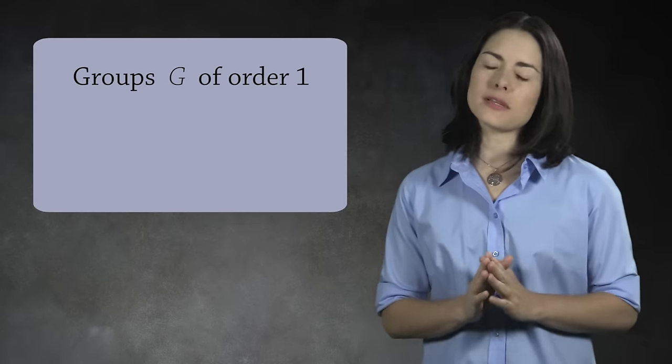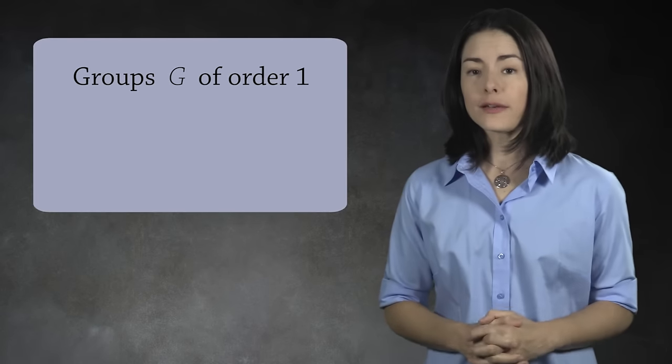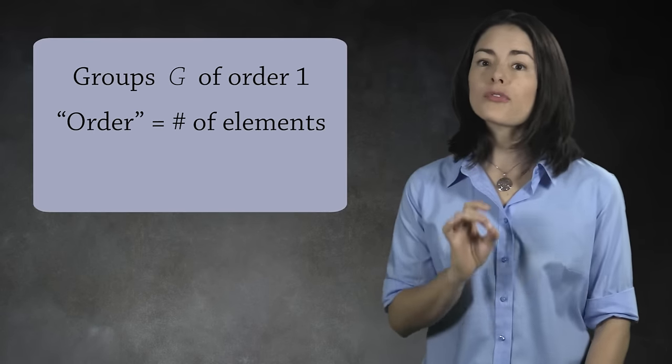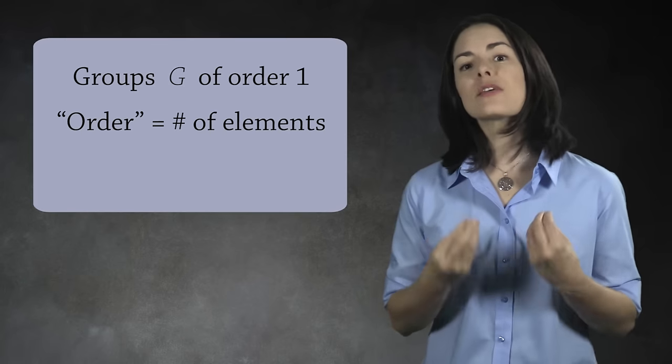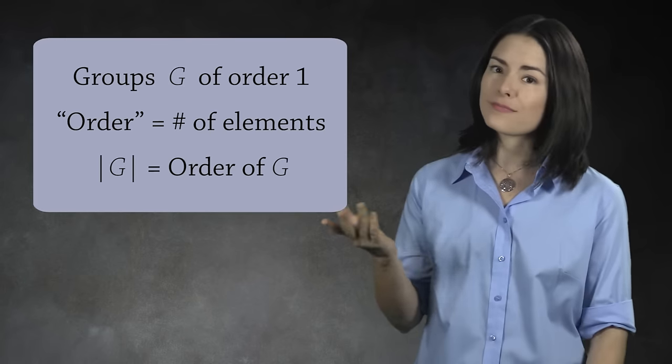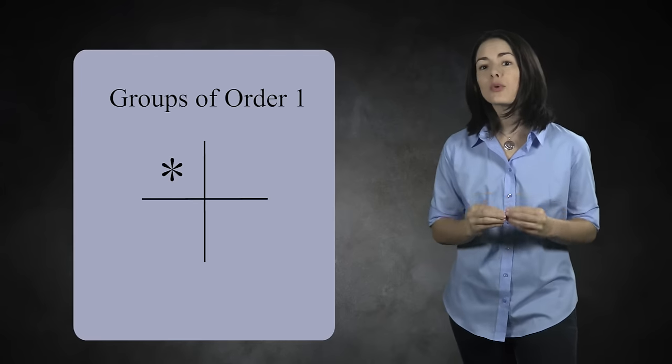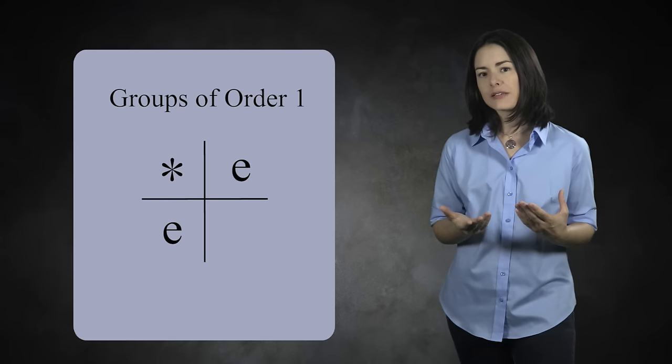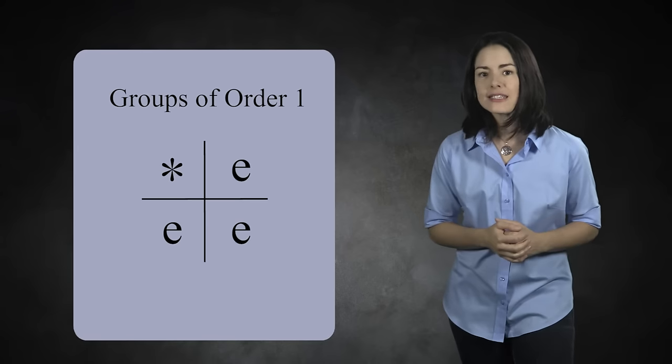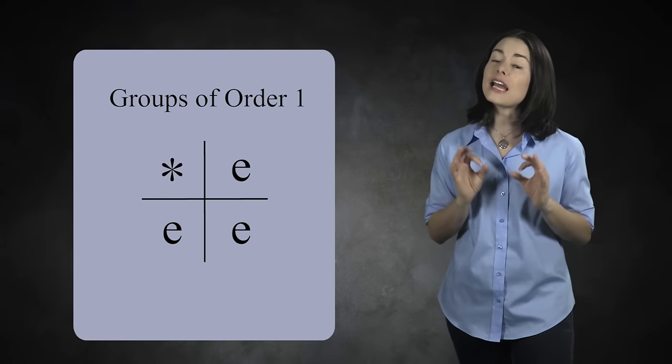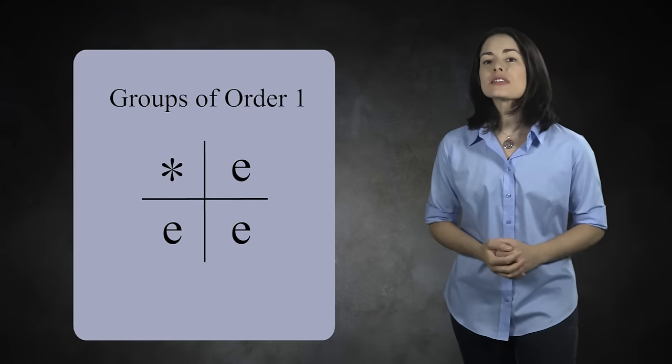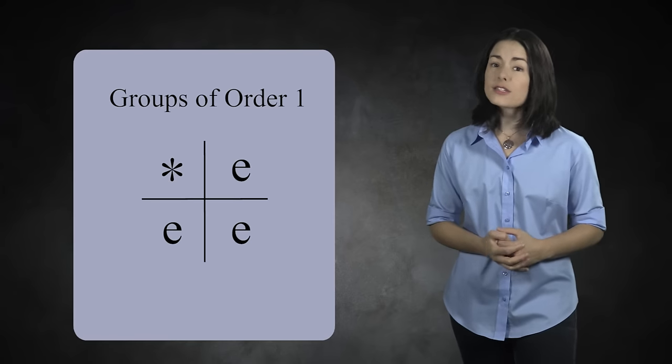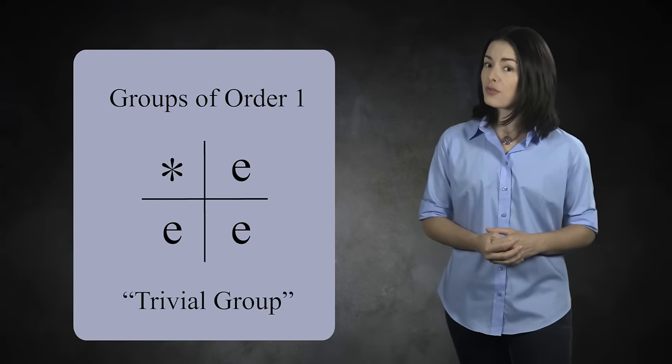We're now going to use Cayley tables to find the first few small groups. We'll begin with the simplest case, groups of order 1. Quick reminder, the order of a group is just the number of elements in the group. To start, every group must have an identity element. We'll use E for the identity element. E times E must equal E since it's the only element around and it's the identity element. So there's a single group of order 1. This cute little group is called the trivial group.